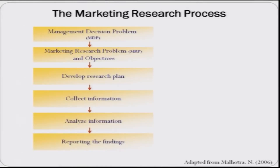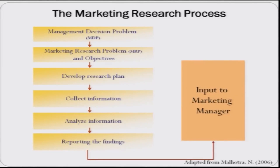We have looked into the different steps of the marketing research process. It starts with the management decision problem, followed by the marketing research problem and objectives of the research project. Then you develop your research plan, which is followed by collection of information, analysis of the data collected, and then reporting the findings to marketing managers or decision makers. Today I am going to talk in detail about the management decision problem and the marketing research problem.